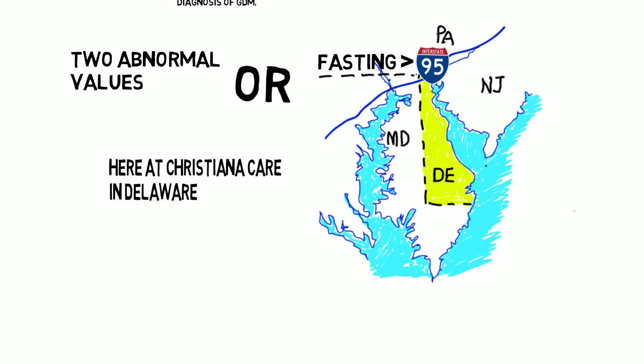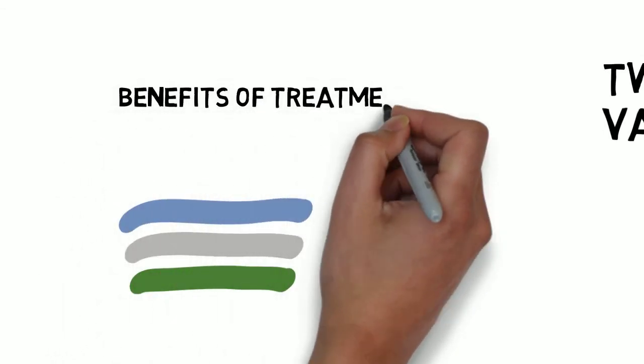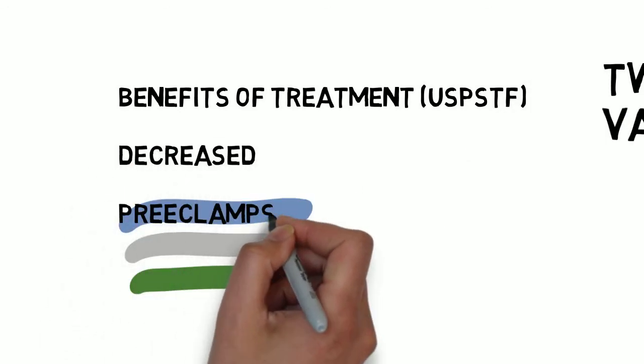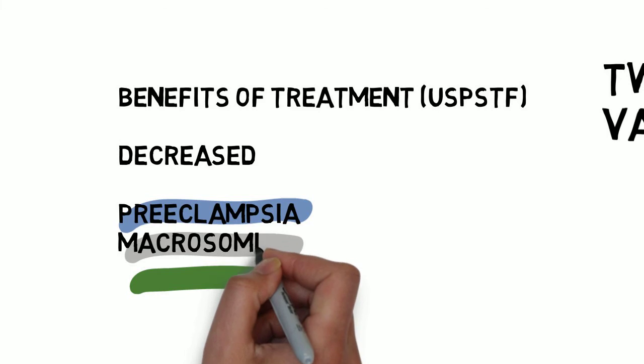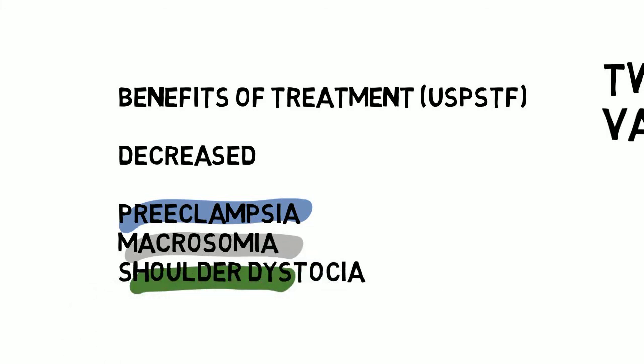Does treating gestational diabetes result in any benefit? Jeez, I hope so. But for now, let's leave it at saying the U.S. Preventative Services Task Force review found reduced risk of preeclampsia, shoulder dystocia, and macrosomia.